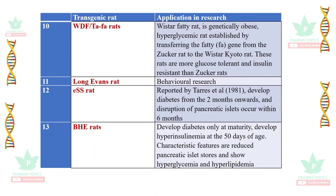The Zucker diabetic fatty (ZDF) or fafa rats are useful models for development of glucose intolerance, hyperinsulinemia, and non-insulin-dependent diabetes mellitus without diabetic ketoacidosis. The WTF/TFA (Wistar fatty) rat is a genetically obese hyperglycemic rat established by transferring the fatty (fa) gene from the Zucker rat to Wistar Kyoto rats, and is more glucose intolerant and insulin resistant than Zucker rats. The Long-Evans rat is a useful model for behavioral research.